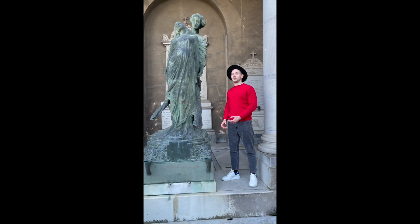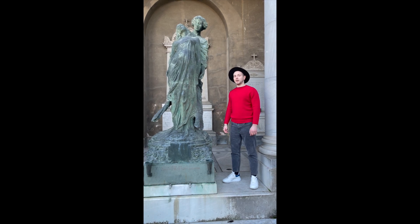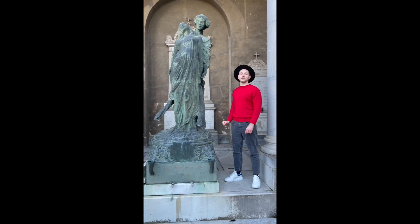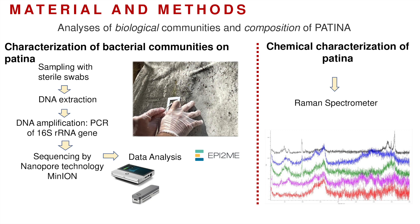The common types of patina found on bronze statues are the pale green, and also black and the dark green ones. Regarding the analysis of the biological community, it includes sampling with sterile swabs, DNA extraction and amplification, followed by sequencing and data analysis. The chemical characterization is performed by Raman spectrometry.